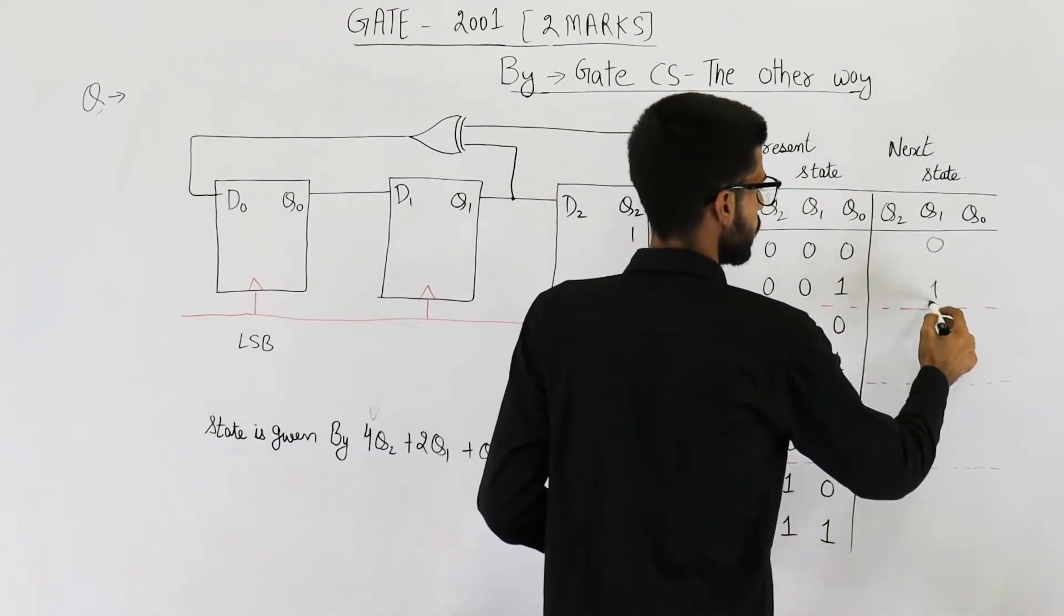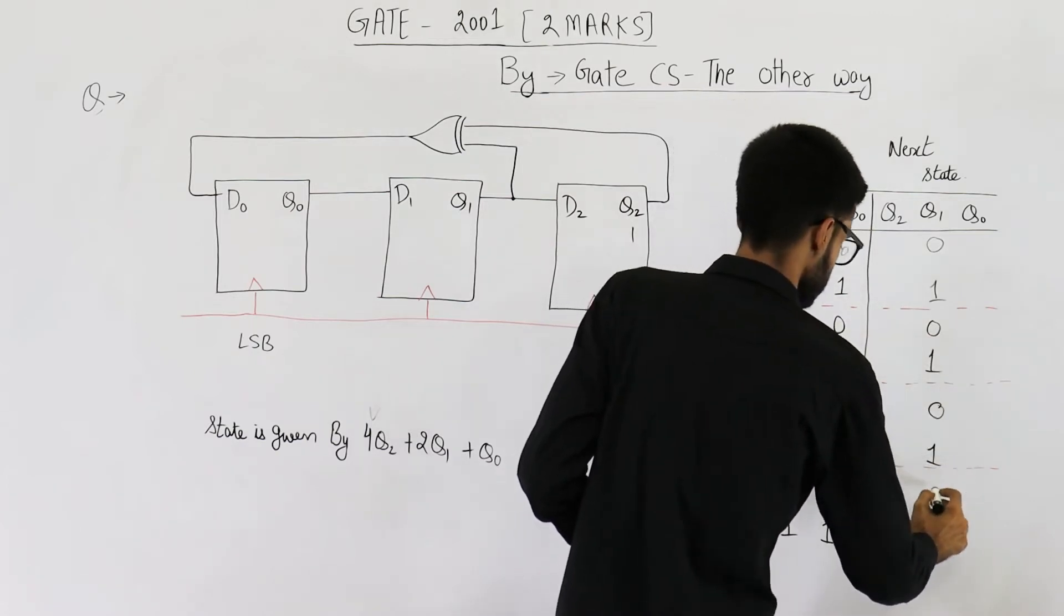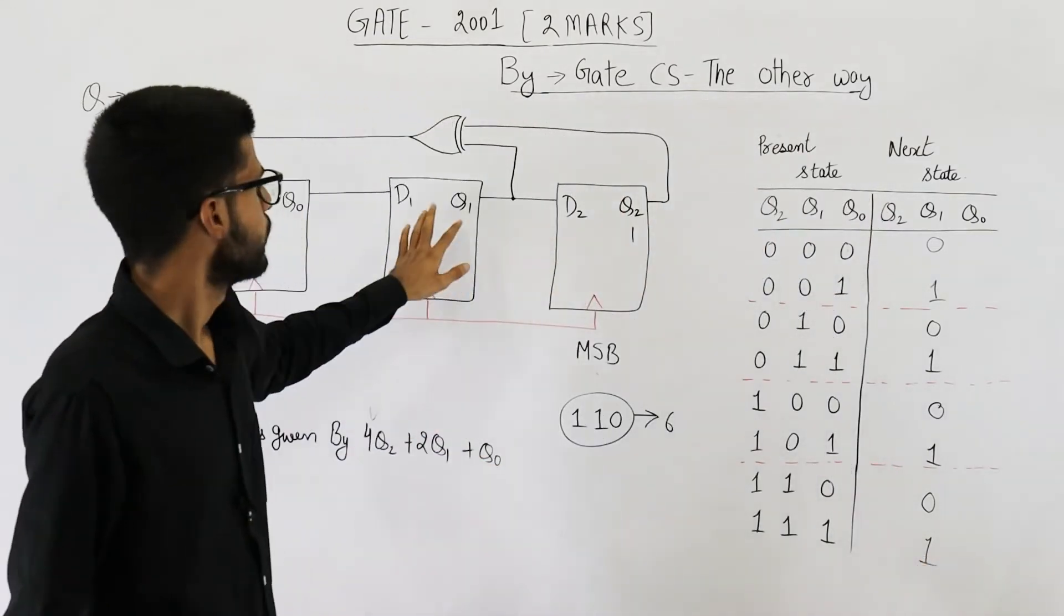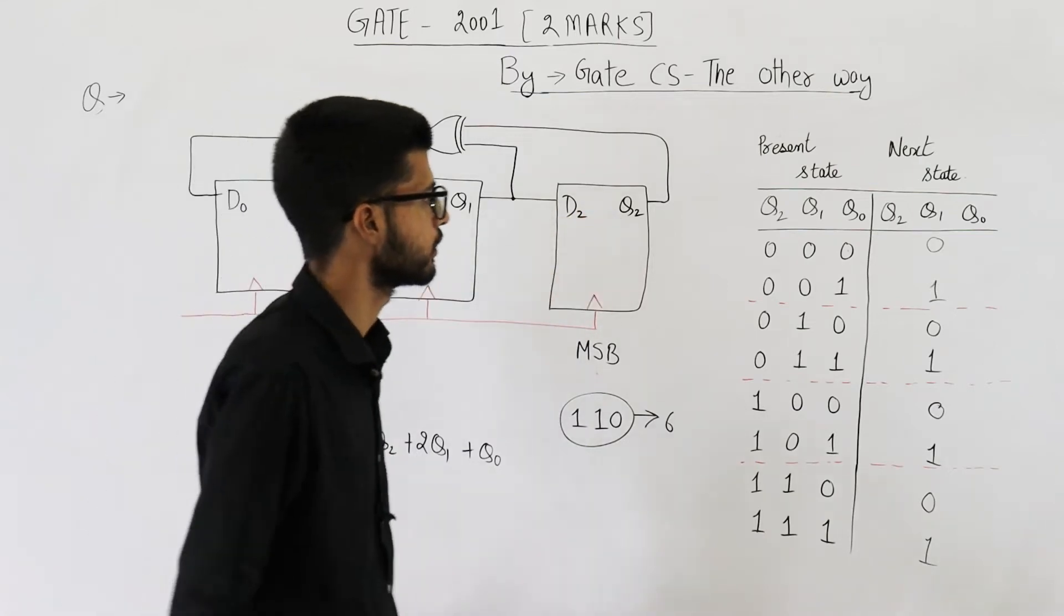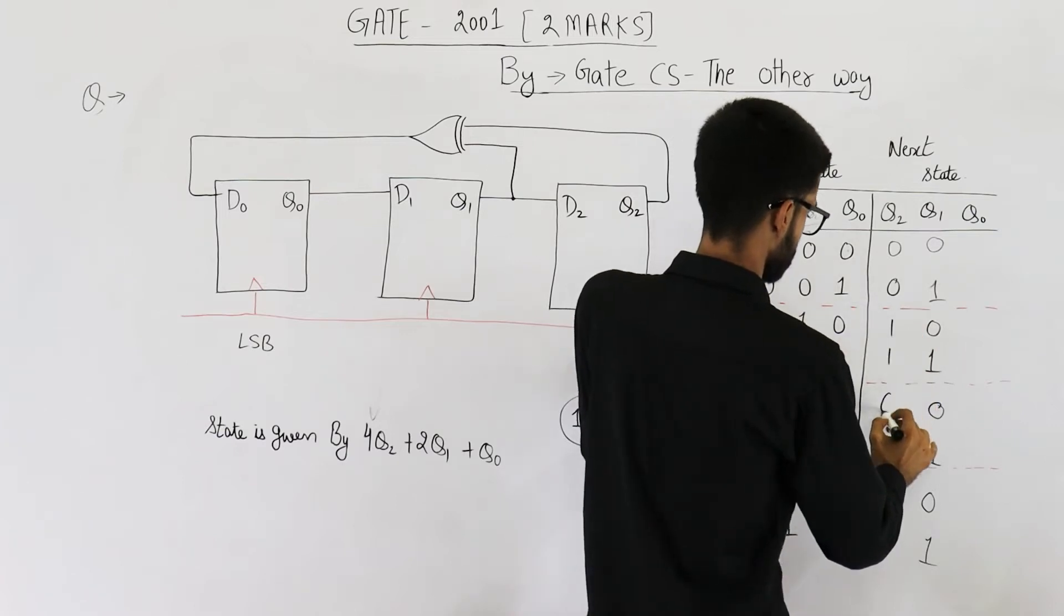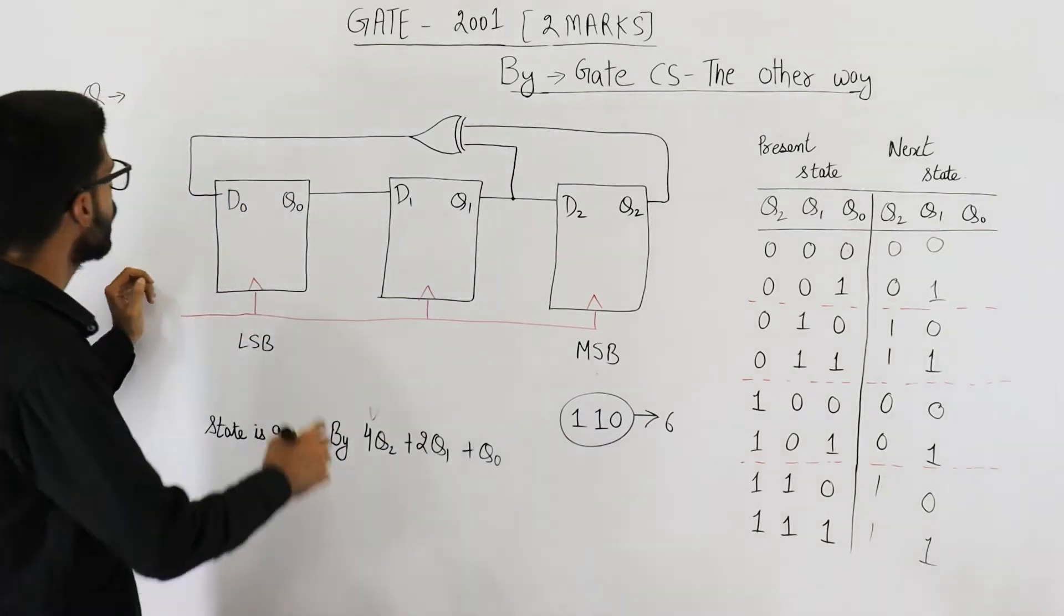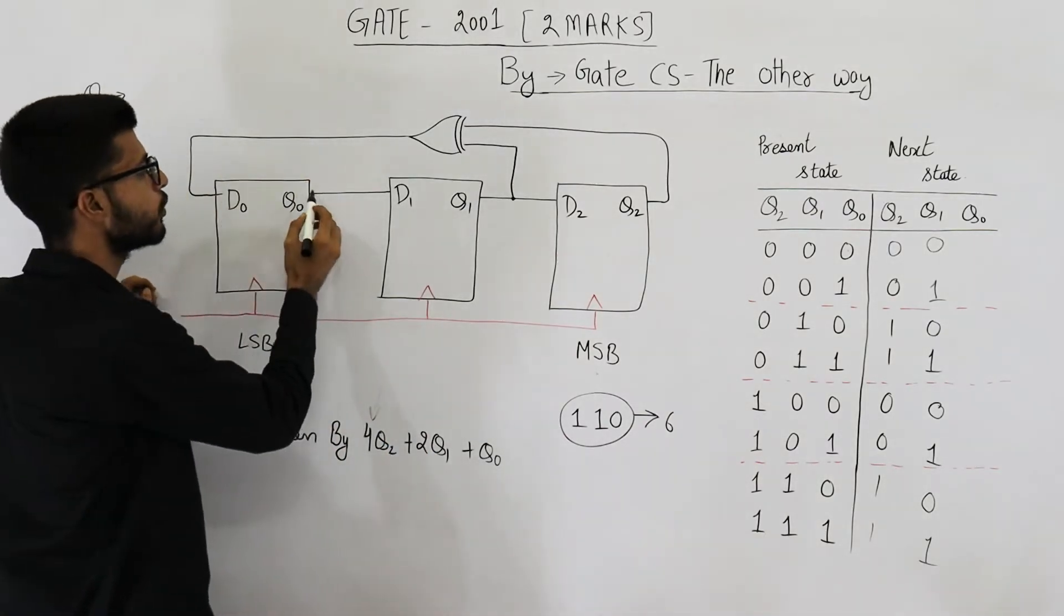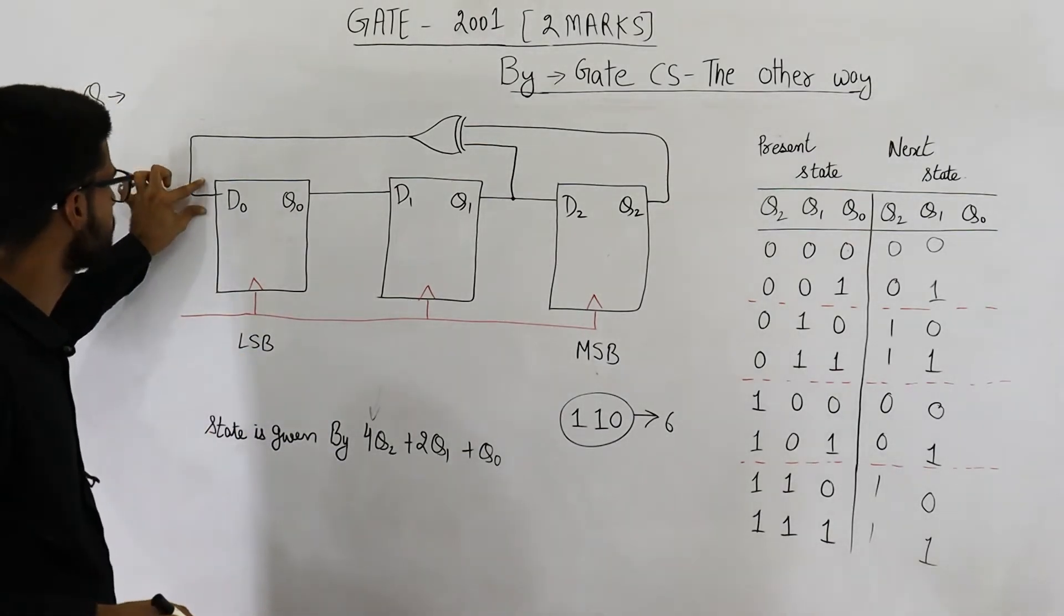Similarly, this bit will be copied here. Similarly, the entire column can be copied. Parallelly, q1 will be copied in q2. So I am doing that. Now you can see whatever is this input D0 will be given as output q0 upon seeing a clock signal. Let us first find what is this D0.